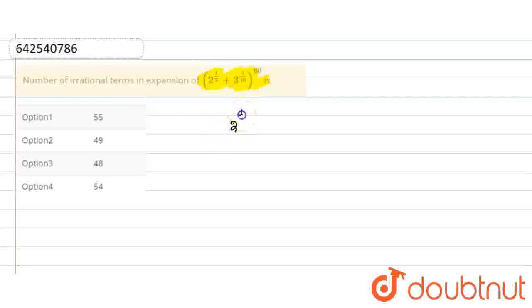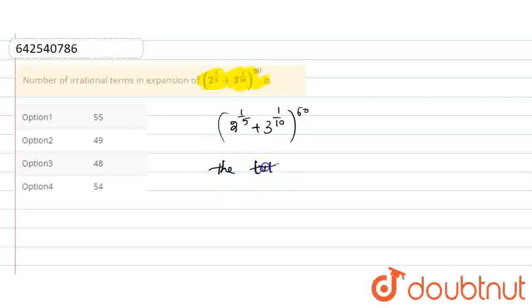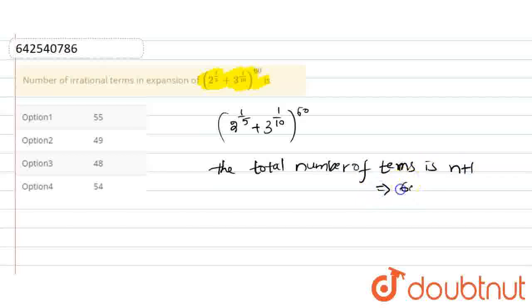We have the expression (2^(1/5) + 3^(1/10))^60. The total number of terms is n plus 1, that is 60 plus 1, which equals 61 terms.